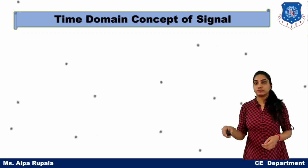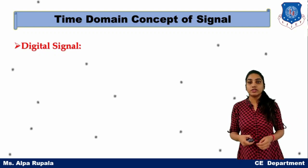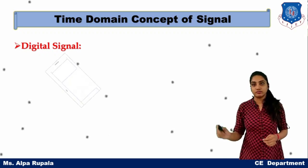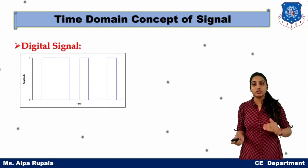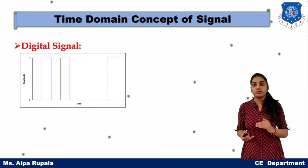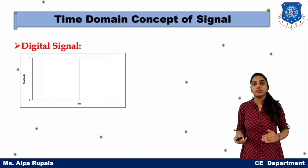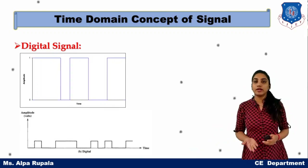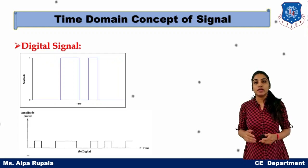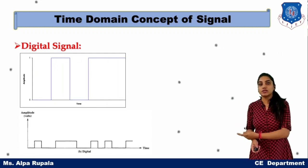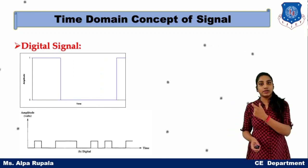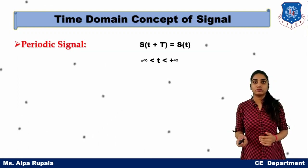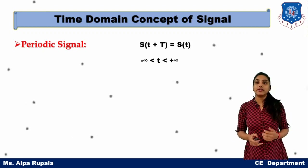The digital signal is a kind of signal which varies — at one particular interval of time it is at one level, and for another particular interval of time it is at another level. In the diagram, the y-axis has the amplitude value and the x-axis has the time value. For a particular time period the signal has zero amplitude, and for another particular time period the signal has a non-zero value.